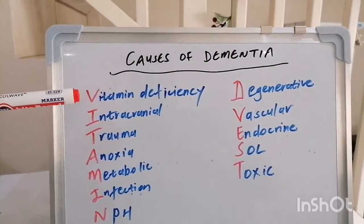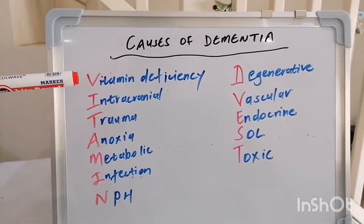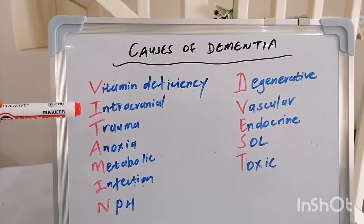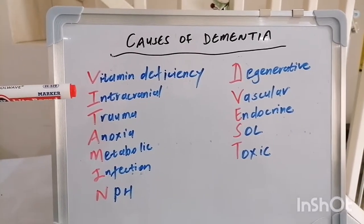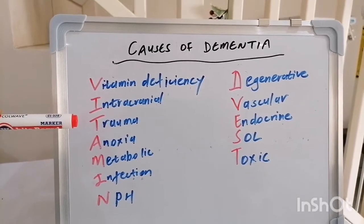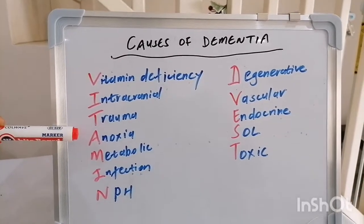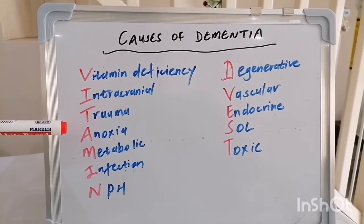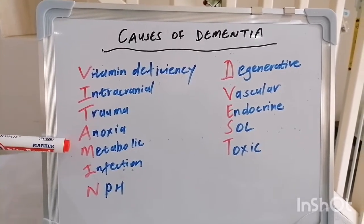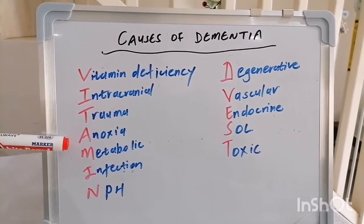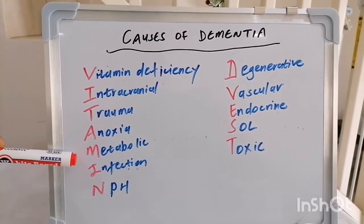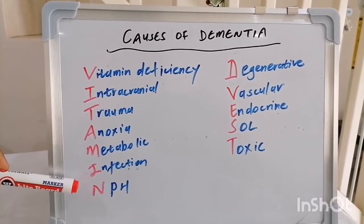Let's dig into this. V speaks to vitamin deficiency, in the way of thiamine, folate, or B12 deficiency. I is for intracranial, in the way of intracranial tumor. T is for trauma, which speaks to head trauma. A is for anoxia, speaking to hypoxic insults. M is metabolic, in the way of diabetes mellitus. I is infection, especially post-encephalitis.